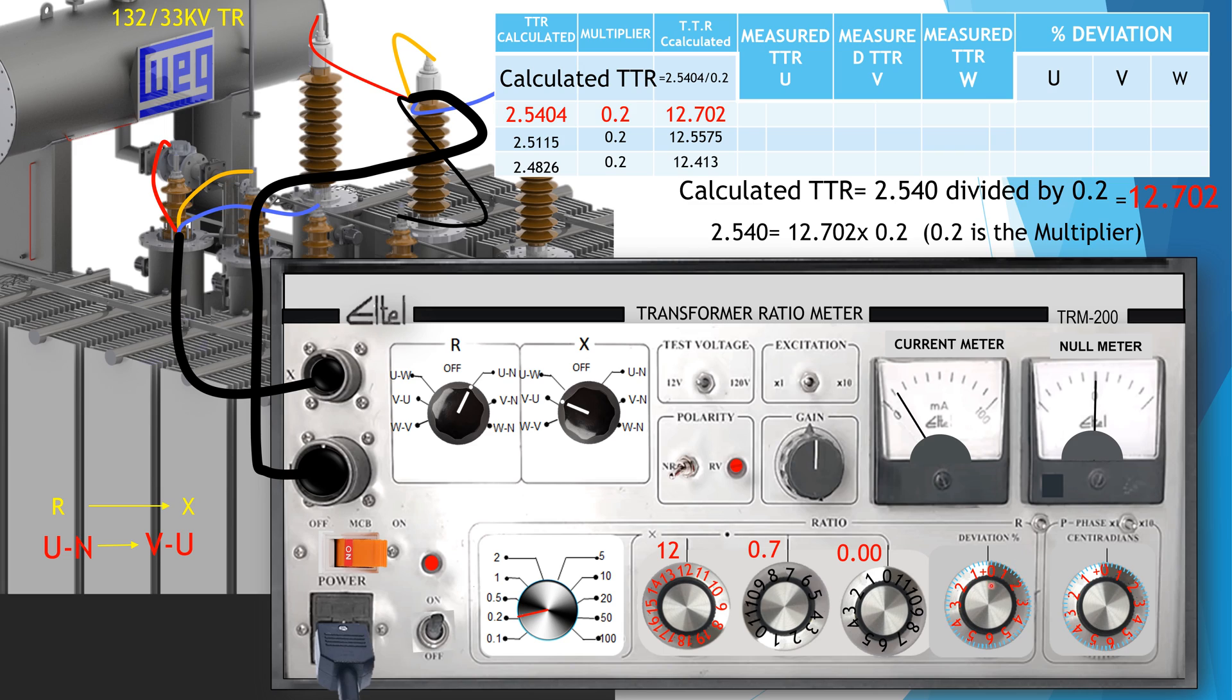Here the deviation of R-phase TTR is 0.16%.